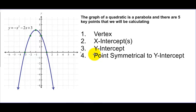So this is another way that we can graph, and this is one that helps us to find out a lot of key information that we're going to need anyway. So we're going to do something called graphing the five key points of a parabola, and here are the five key points.